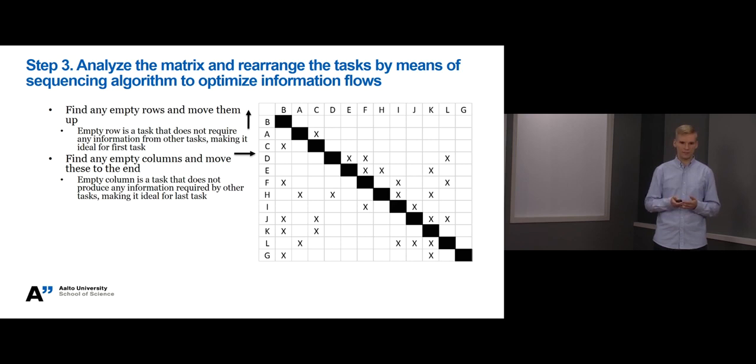Alright, so now we need to sort out the rest of the tasks to optimize information flows. In general, the idea is to move the columns and respective rows so that the cross marks will be below the diagonal or as close to the diagonal as possible. The logic is that inputs are easier to capture than outputs. When we achieve a situation where the cross marks are below the diagonal, it means that all the tasks are sequenced.